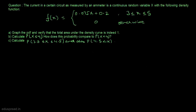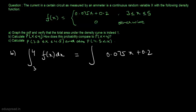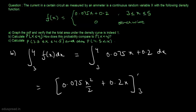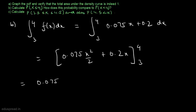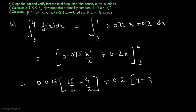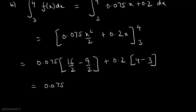In part b we have to calculate the probability that x is less than or equal to 4. We integrate f of x dx from 3 to 4, since the minimum value x takes is 3. This equals the integral of 0.075x plus 0.2 dx from 3 to 4, which equals 0.075 x squared over 2 plus 0.2x evaluated from 3 to 4. This gives 0.075 times (16/2 minus 9/2) plus 0.2 times (4 minus 3), which equals 0.075 times 7/2 plus 0.2, equal to 0.4625.